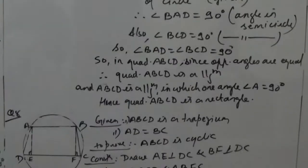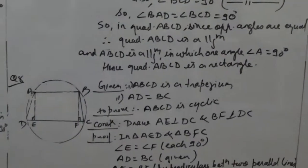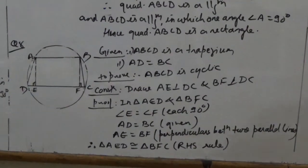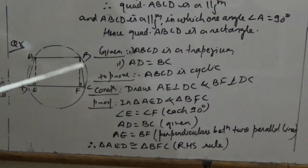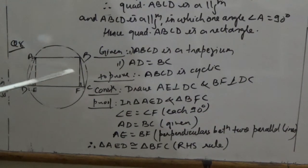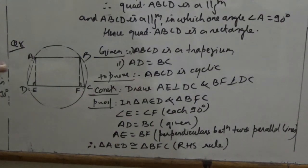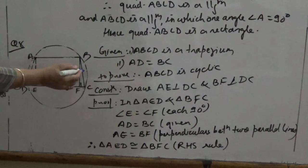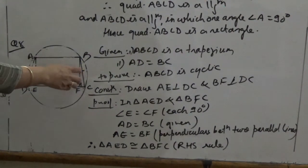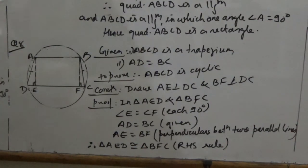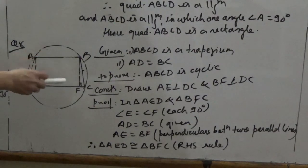In question 8, it is given that if the non-parallel sides of a trapezium are equal, then prove that it is cyclic. So ABCD is a trapezium in which the non-parallel sides AD and BC are equal — AD equals BC. We have to prove that ABCD is a cyclic trapezium by showing the sum of opposite angles equals 180 degrees.